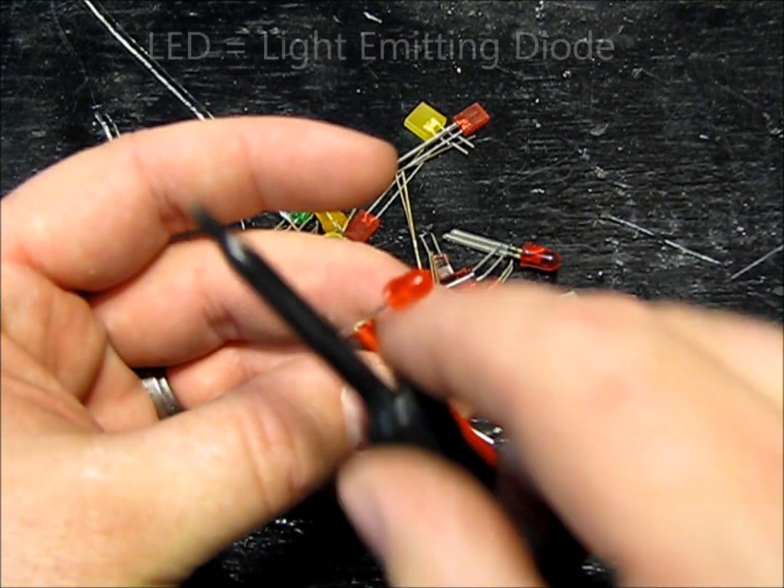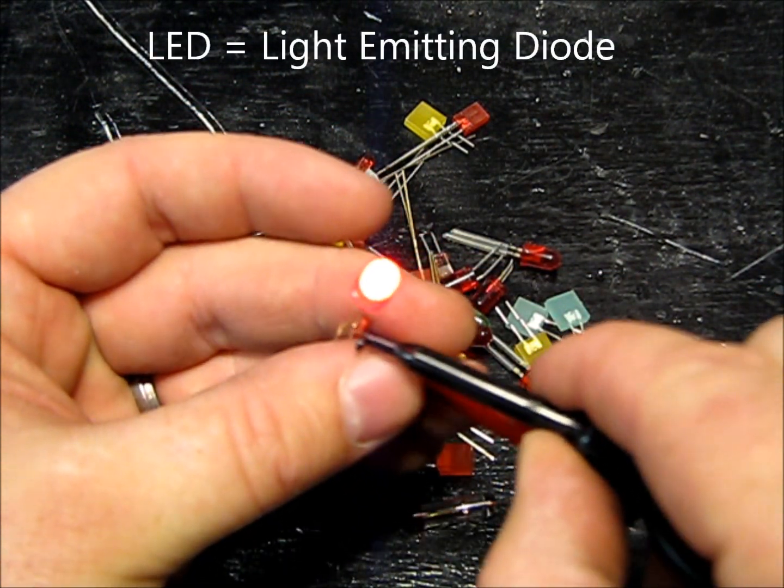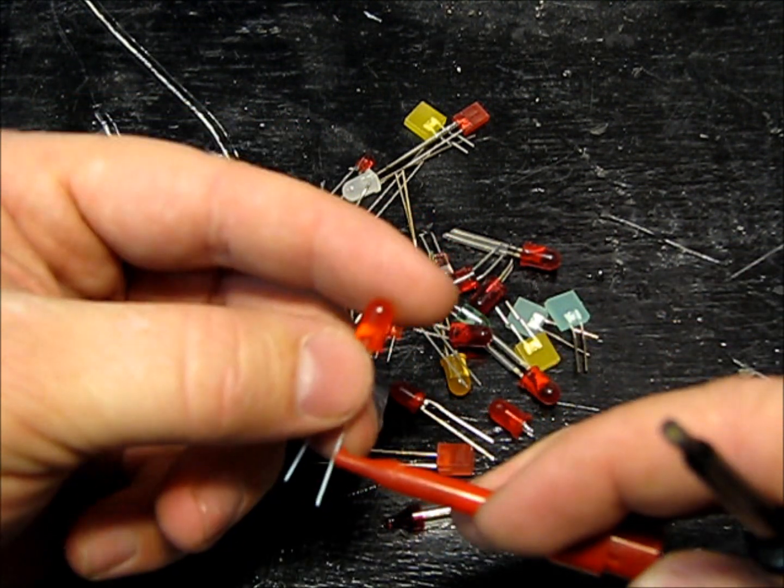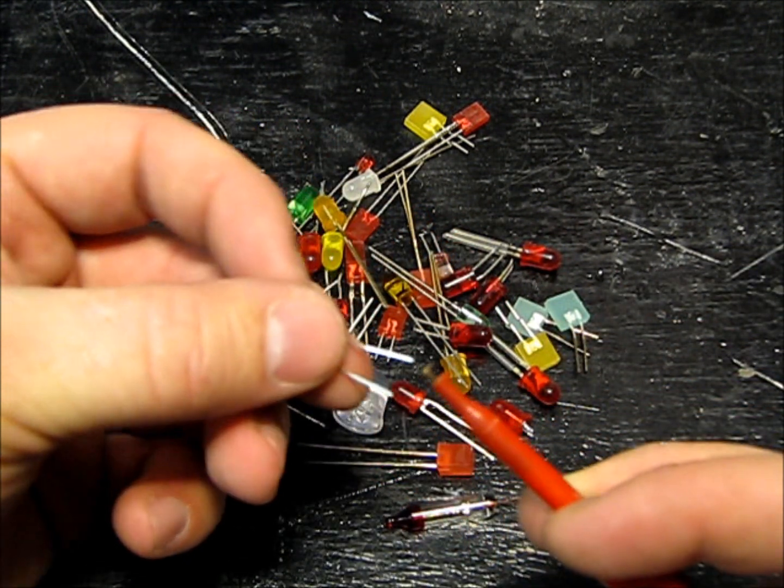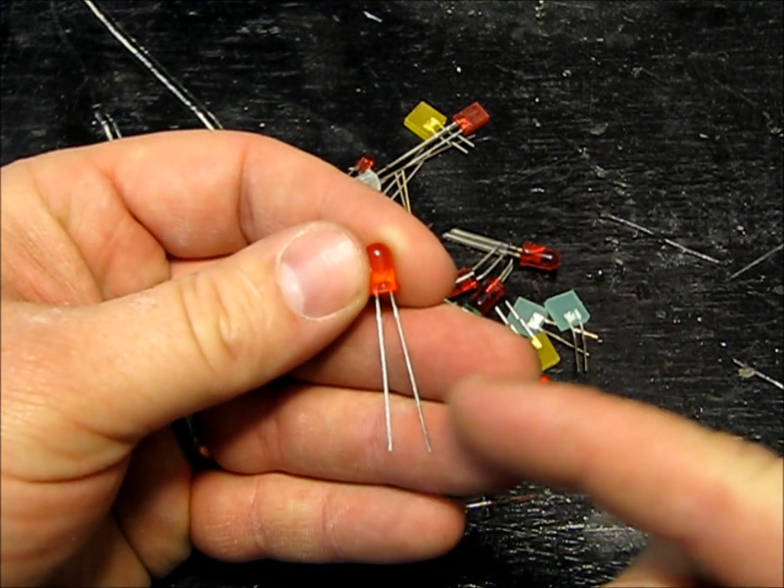An LED emits light, of course, but it's also a diode. And if you don't know what a diode is, a diode only allows electricity to flow one direction.